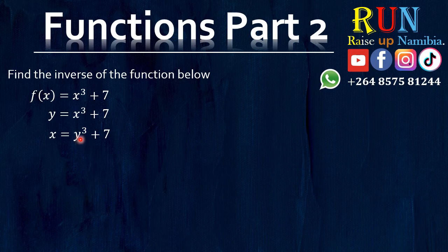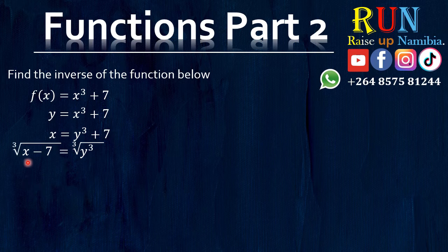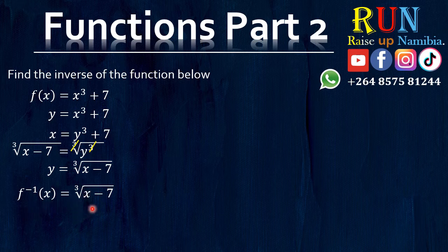So how do we do that? By getting y alone on one side. We need to remove this positive 7 — we take it to the other side where it becomes negative 7. And then we are left with y cubed. To get y alone we need to find the cube root of y³. Remember whatever you do on one side you need to do on the other side, so we also find the cube root of the expression on the left hand side. This will cancel out and you will be left with y is equal to the cube root of x minus 7. So the inverse of f of x is equal to the cube root of x minus 7 — that is your final answer. Easy, isn't it?